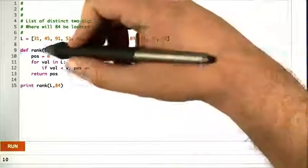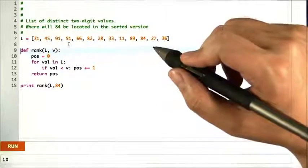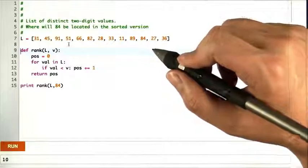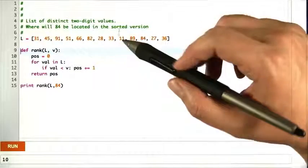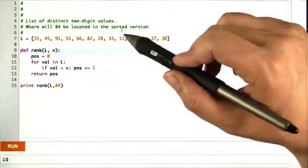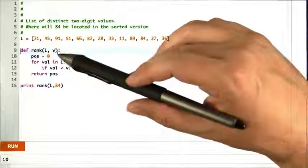Alright, so we're going to modify this rank algorithm that we had before to do what I suggested. It's going to return a slightly sorted list than the one that it was given with regard to some value of v.